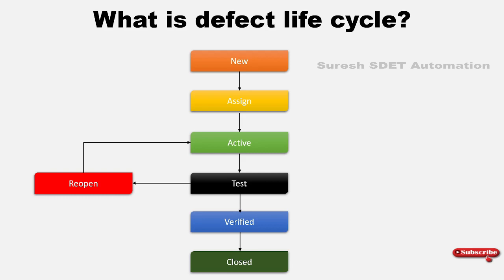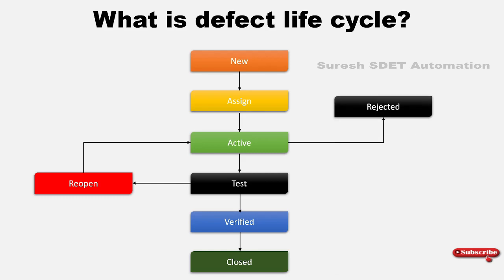Another scenario: a defect is created, assigned to a developer, and the developer says it is not a valid defect or there is no scope to fix it. In that case, the developer will reject it — there is a stage called 'Rejection.' During the entire testing phase or per release, the defect rejection rate should be less than 5%. If it goes beyond 5%, that reflects on the productivity of the testers, meaning they are not clear enough about the requirements. Make sure rejection does not exceed 5%.